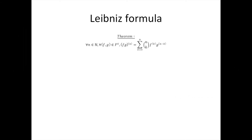This is a theorem: for all natural numbers n, for all functions f and j, the nth derivative of fj is equal to the sum from k equal to 0 to n of n choose k, times the kth derivative of f, times the (n minus k)th derivative of j.